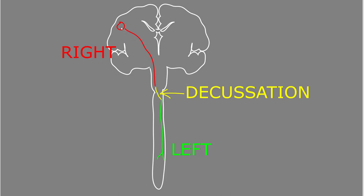In this example, we have a bundle of axons that starts on the right side of the central nervous system, crosses the midline, and then travels on the left side. That area where it crosses the midline is called the decussation. Many pathways in the nervous system decussate, or cross from one side to the other.